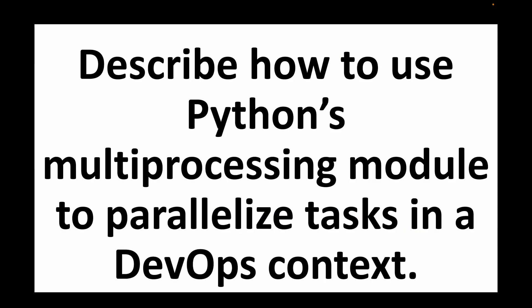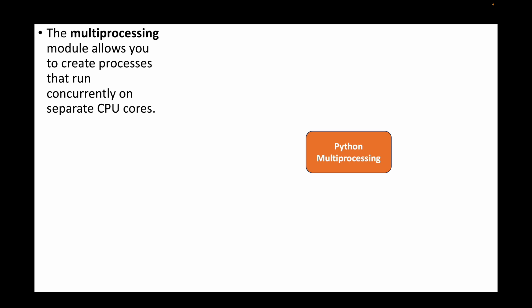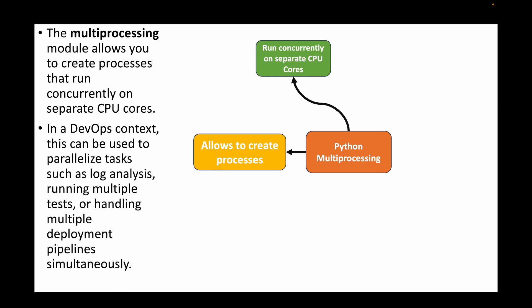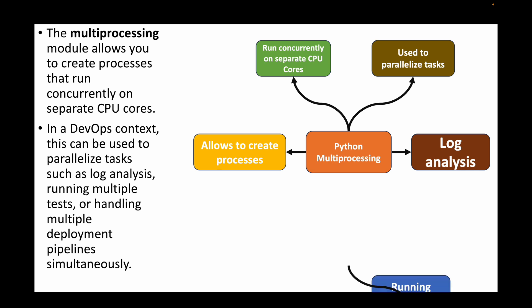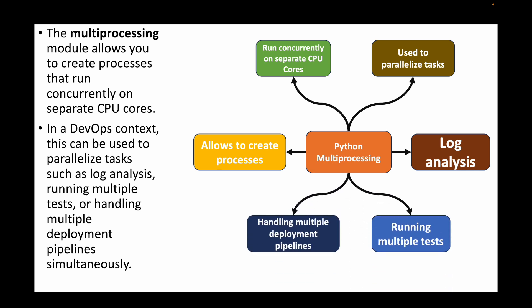The next question is: describe how to use Python's multiprocessing module to parallelize tasks in a DevOps context. The multiprocessing module helps us create processes that run concurrently on separate CPU cores. In a DevOps context we can use it to parallelize tasks such as running log analysis, running multiple test suites, or handling multiple deployment pipelines simultaneously.